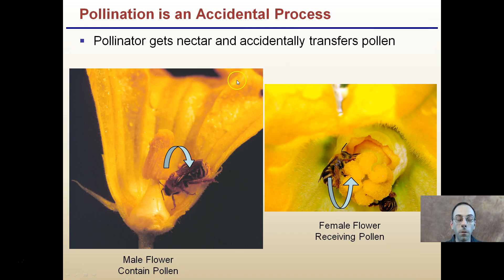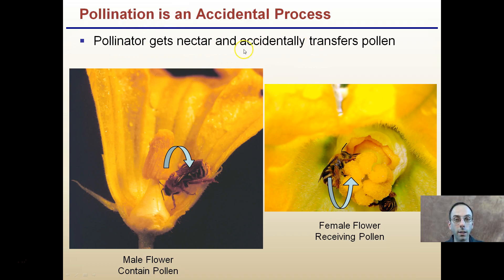That pollination process is actually accidental. It's kind of amazing that something we're so dependent on for sustaining our species and providing enough food for the world is actually an accidental process. The pollinator gets nectar and accidentally transfers pollen. Here's a bee going down getting nectar, bumping into this portion and transferring pollen over — the bee is more concerned about the nectar than the actual pollen.